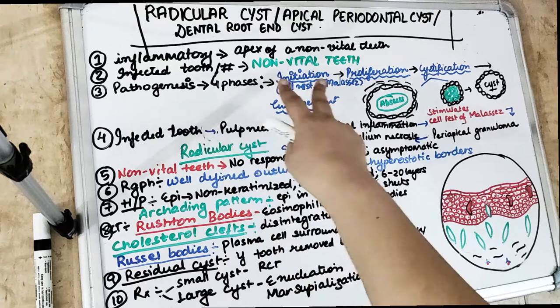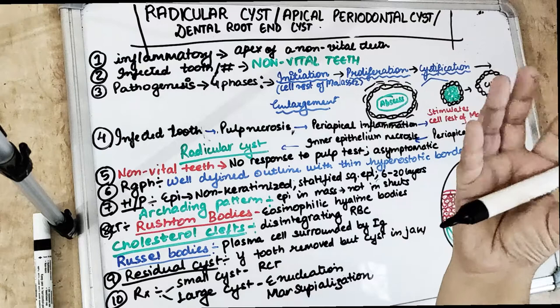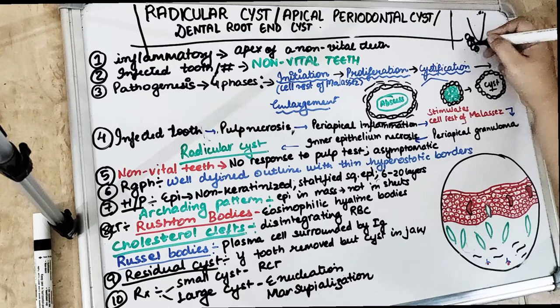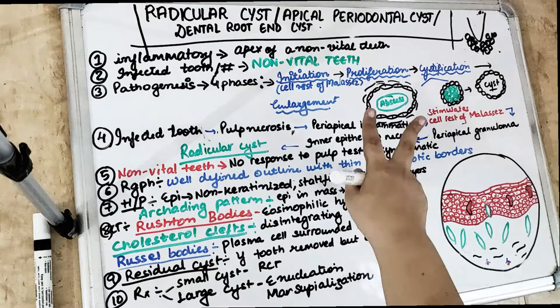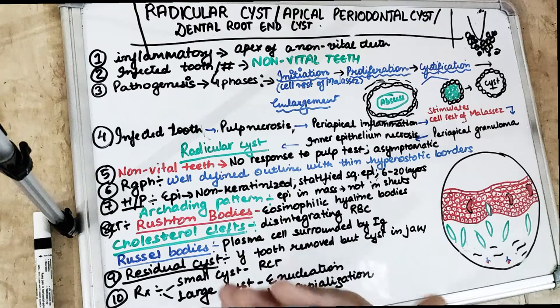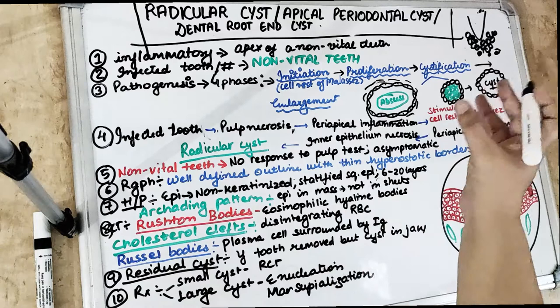Phase two is proliferation. There is formation of a large mass of epithelial cells in the periapical area of an infected tooth. The proliferation of cells occurs because of an increase in carbon dioxide tension, decrease in oxygen tension, decrease in pH (acidic pH), pulpal necrotic products, and many other factors that cause proliferation of cells.